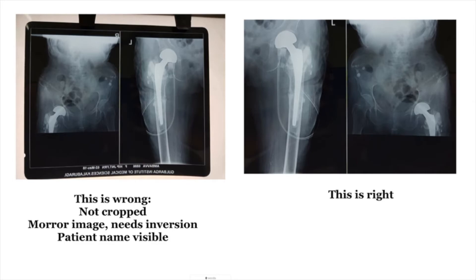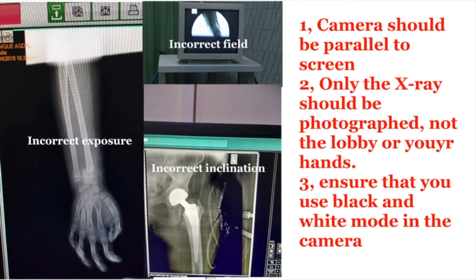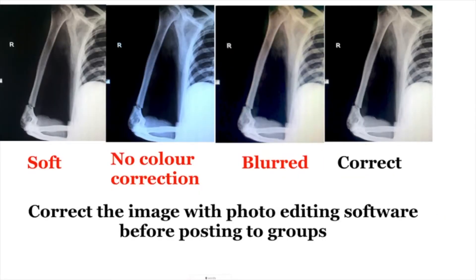The picture on the left is wrong — it is a mirror image; on the left it shows the right. It is not cropped. It shows the patient's name, the hospital's name, and the film is oblique. The one on the right is absolutely right, properly cropped and balanced. The picture should be focused correctly, the feel should be correct, the inclination should be correct, and most importantly, one must use the black and white mode in the camera while photographing an X-ray on an X-ray lightbox.